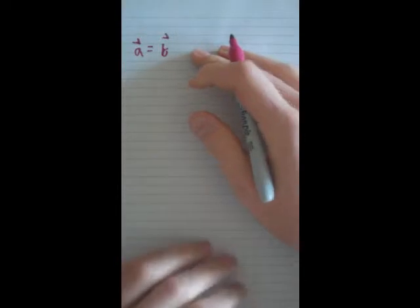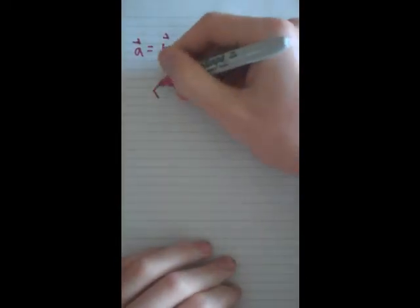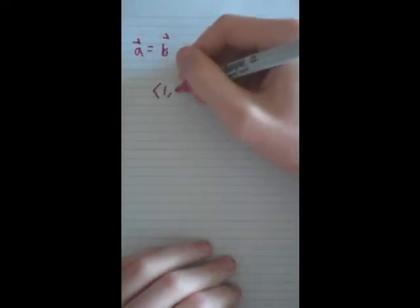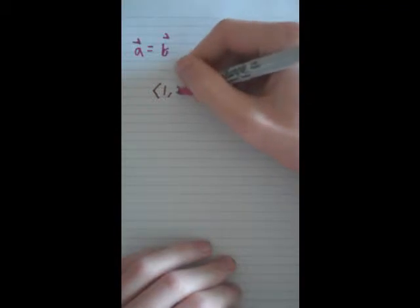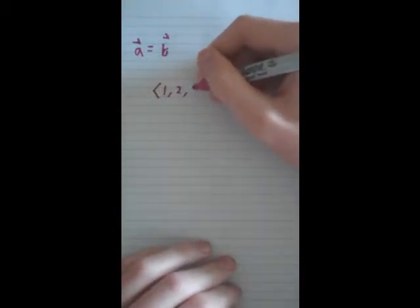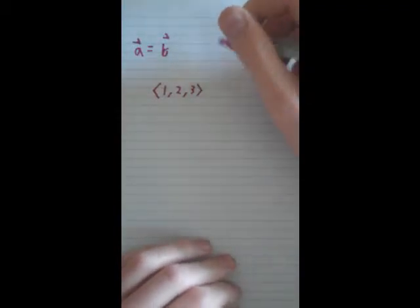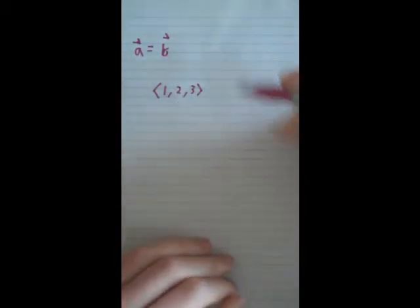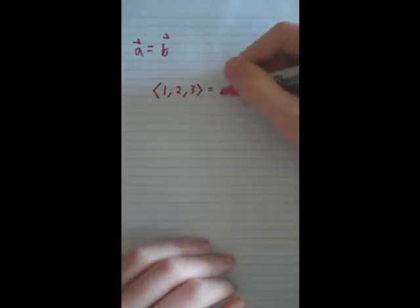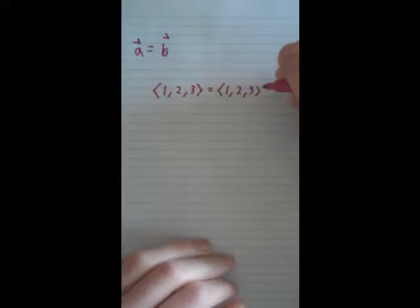Vector A equals vector B. Let's give A some arbitrary numbers. Say vector A equals 1 in the x component, 2 in the y component, and 3 in the z component. So naturally, since A equals B, B has to equal 1, 2, and 3, just like A.